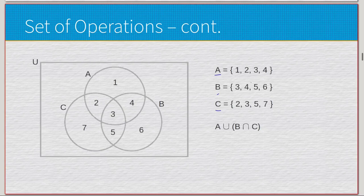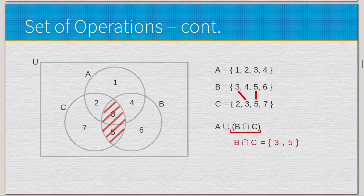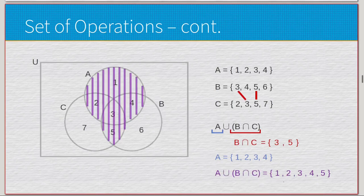Just like propositional logic, we can chain these operations together. With sets A = {1, 2, 4}, B = {3, 4, 5, 6}, and C = {2, 3, 5, 7}, consider A union (B intersect C). Following order of operations, we first compute the parentheses: B intersect C gives us {3, 5}. Then we union that with A, which adds the rest, giving us a final set of {1, 2, 3, 4, 5}.